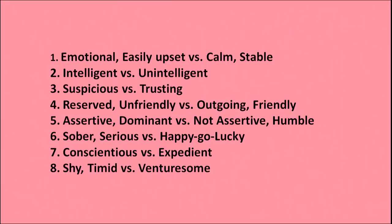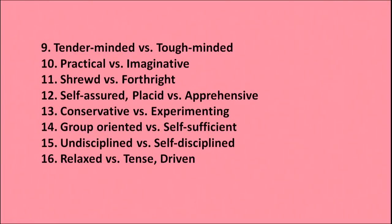All 16 factors of personality are bipolar. For example: emotionally easily upset versus calm and stable; intelligent versus unintelligent; suspicious versus trusting; reserved and unfriendly versus outgoing and friendly; assertive and dominant versus non-assertive and humble; sober and serious versus happy-go-lucky; conscientious versus expedient; shy and timid versus venturesome; tender-minded versus tough-minded; practical versus imaginative; shrewd versus forthright; self-assured and placid versus apprehensive; conservative versus experimenting; group-oriented versus self-sufficient; undisciplined versus self-disciplined; relaxed versus tense and driven.